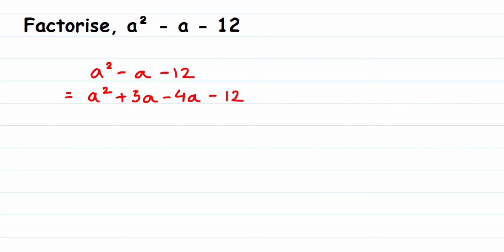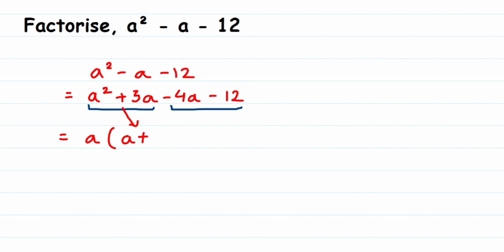Now we group the terms: group the first two terms and the last two terms. In the first group, a squared plus 3a, the common factor is a. Taking a out gives a times a plus 3. For the last two terms, minus 4a minus 12, we take minus 4 as common. Taking out minus 4 leaves a plus 3 inside the bracket.